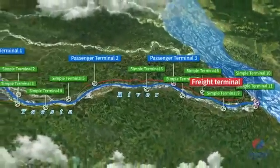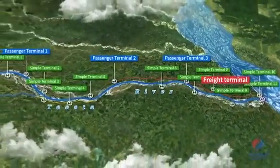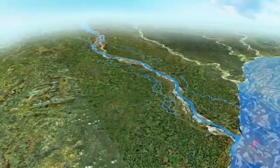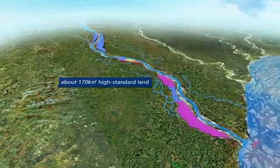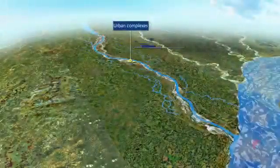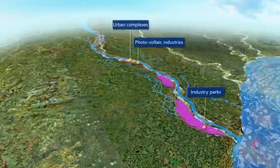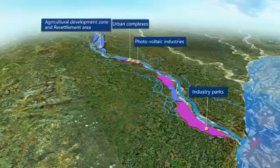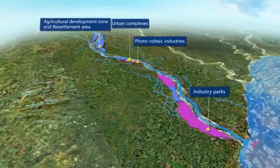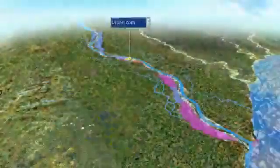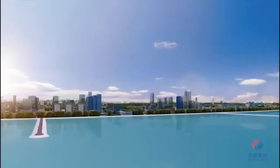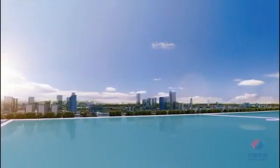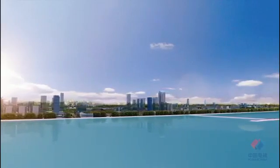New embankment roads and new wharves will be built alongside both banks. According to the concept of comprehensive management, about 170 square kilometers of high-standard land will be reclaimed on both sides of the Tista River. Urban complexes, photovoltaic industries, industrial parks, and agricultural development zones will be planned to promote resource and social-economic development. A new modern town with people-oriented industrial upgrading and ecological livability will be planned.